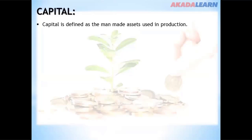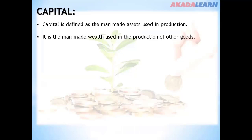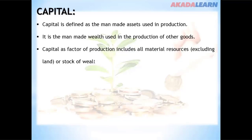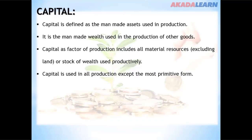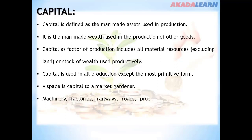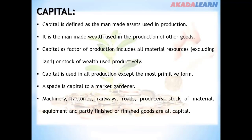Capital as a factor of production is defined as the man-made asset used in production — it is man-made wealth used in the production of other goods. Capital includes all material resources excluding land, or stock of wealth used productively. Examples include a spade for a farmer, machinery, factories, railways, roads, equipment, and partly finished or unfinished products.